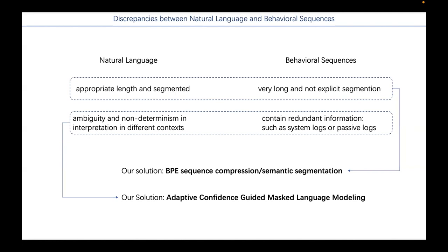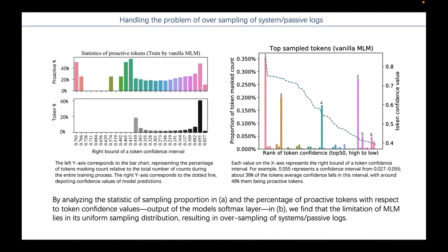Directly applying vanilla masked language modeling (MLM) may lead to biased sampling. As can be seen from the left figure, the most frequently masked tokens under vanilla MLM are automatic system logs and passive logs. Tokens ranked 2nd, 4th, 5th, and 6th are similar passive logging actions. We believe sampling too many system or passive logs is of little help in modeling personalities for different players. From the right figure, we see an increasing trend of proactive actions as token confidence goes down, consistent with the perception that player subjective will is much more difficult to infer. Under vanilla MLM, task-irrelevant logs are oversampled and task-relevant proactive actions are not fully exploited.